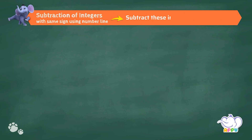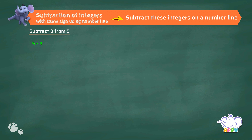Subtract these integers on a number line. Subtract 3 from 5. 5 minus 3. Here, 5 and 3 are positive integers. Let's subtract.